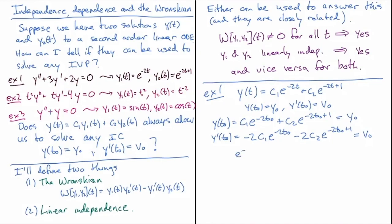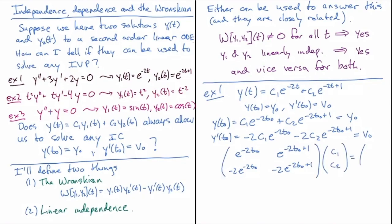We can rewrite this as a matrix equation using tools from linear algebra. The matrix is: [e^(−2t₀), e^(−2t₀+1); −2e^(−2t₀), −2e^(−2t₀+1)] multiplied by [c1; c2] = [y₀; v₀]. The question of whether this can solve any equation comes down to whether this matrix is invertible — if it is, we multiply through by the inverse and get c1 and c2.